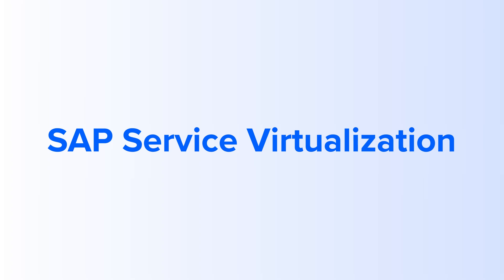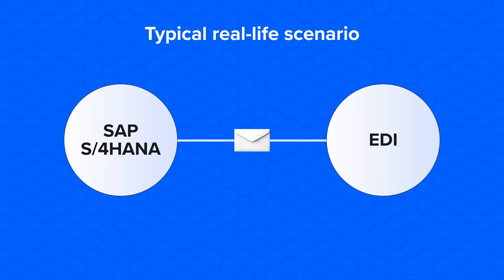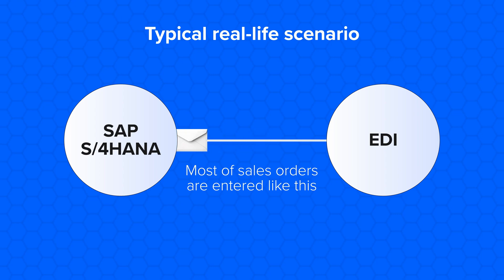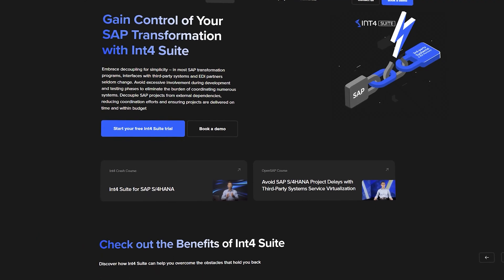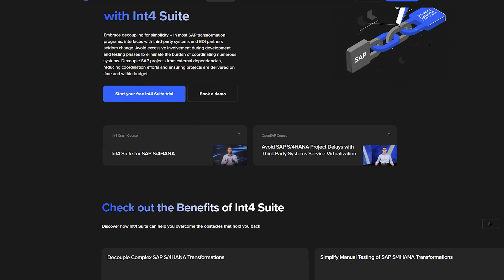The answer is to use SAP Service Virtualization. To explain this concept in the simplest terms: your partners would normally send you messages in electronic format, so instead of asking them to send those messages, you can do it yourself by simulating the partners and third-party systems with a click of a button. That functionality is part of R&T for Suite, a powerful API testing tool that allows you to test your SAP integrations easier and faster while increasing testing coverage and system quality.